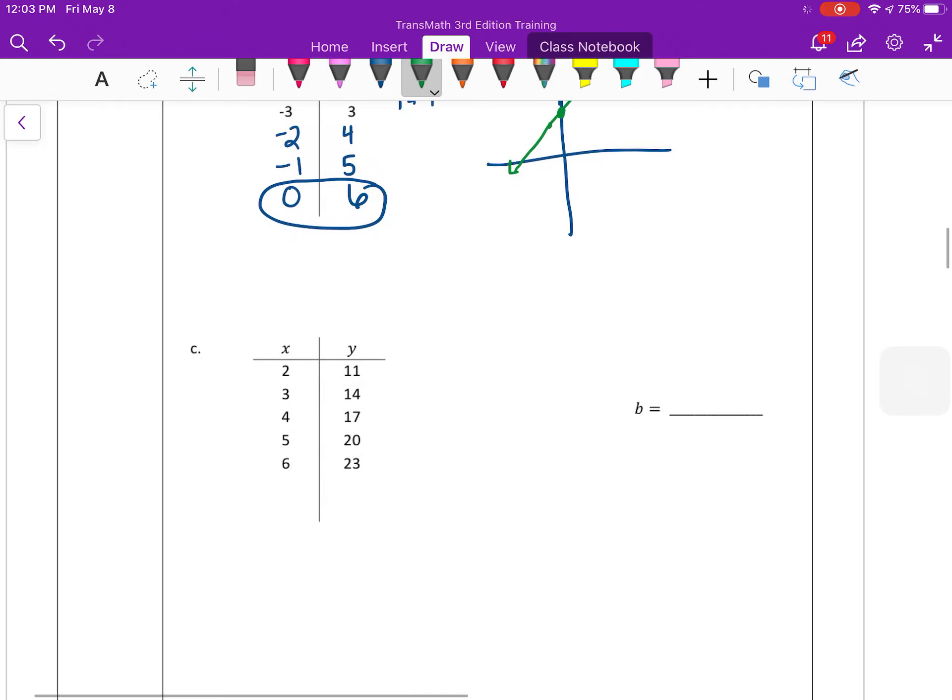Okay, so we're looking for when x equals 0. So it looks like we have to go backwards again. I'm going to go from the bottom up. It looks like I'm subtracting 1. So then I can go 2, 1, 0. Then the pattern over here looks like it's subtracting 3 every time. So 11 minus 3 is 8. And 8 minus 3 is 5. So then when my x is 0, my y is 5. So your y-intercept is 5.